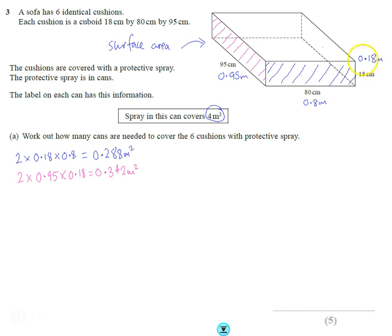If I now work out the area of the face on the top, again there's the top and the bottom, so there's two of them, and these dimensions are 0.95 and 0.8. If I multiply those up, not forgetting to double it, it comes out as 1.52 meters squared.